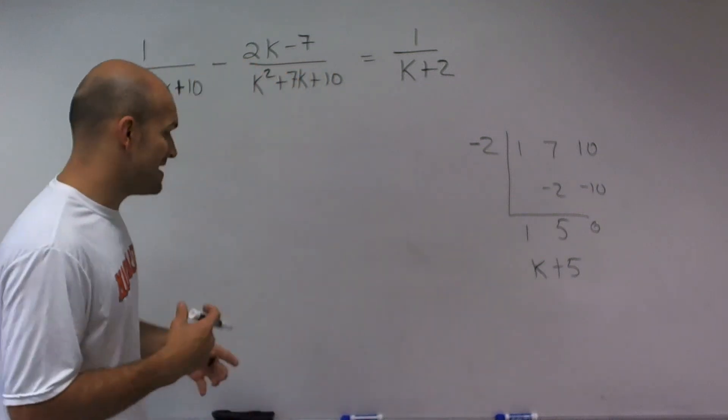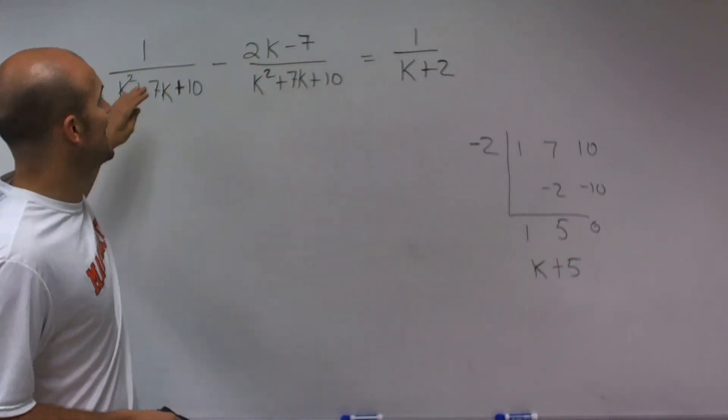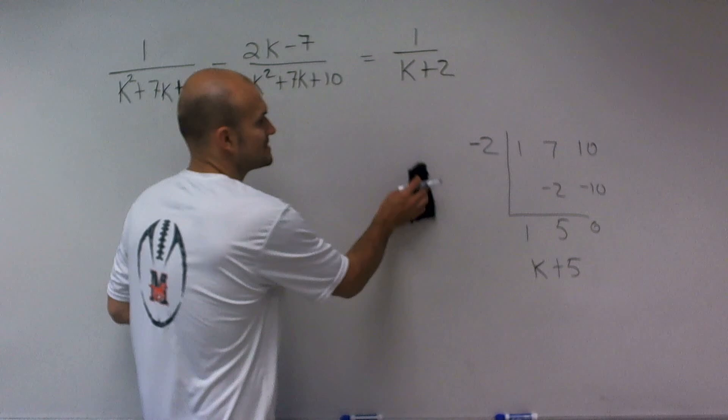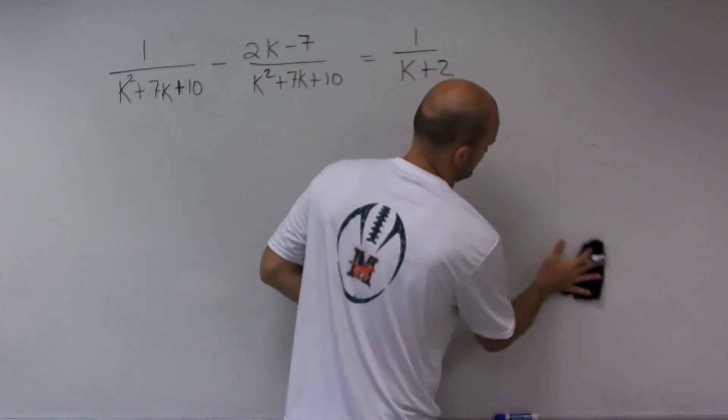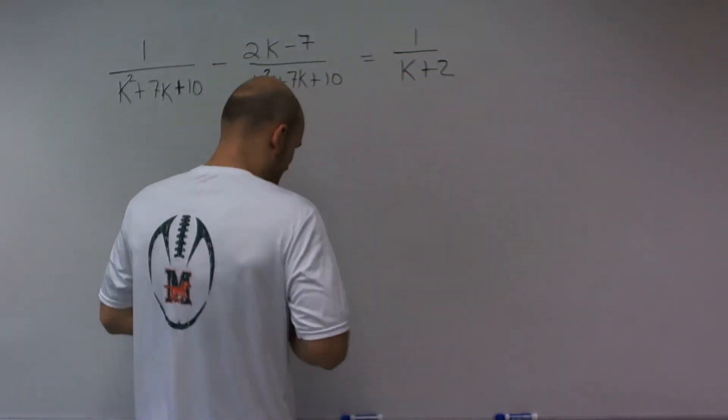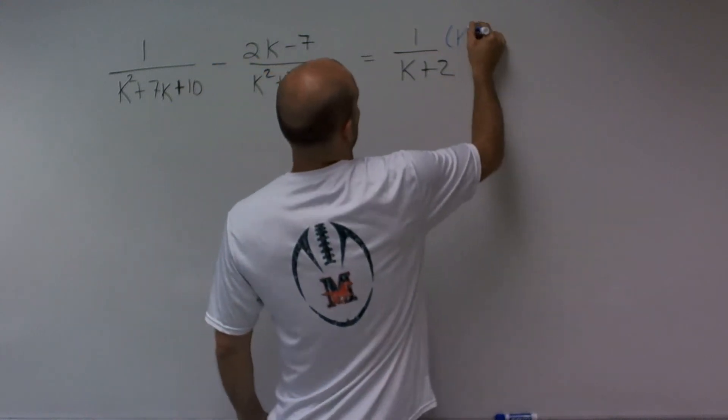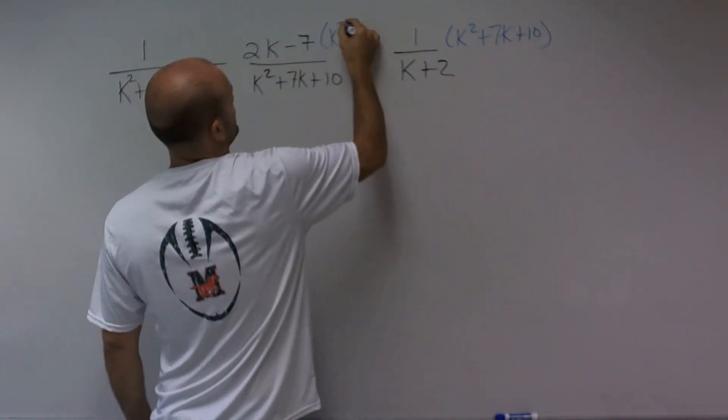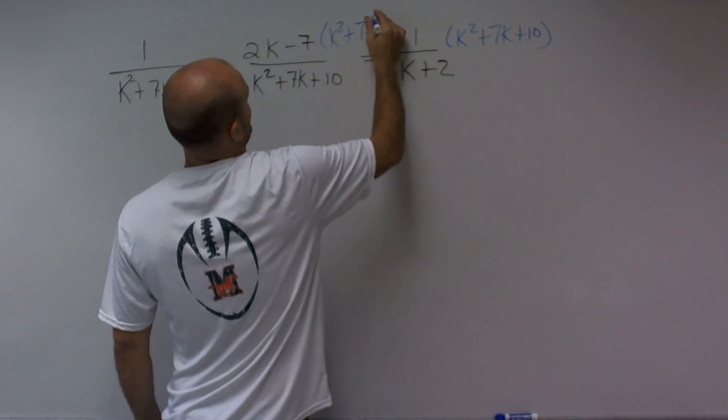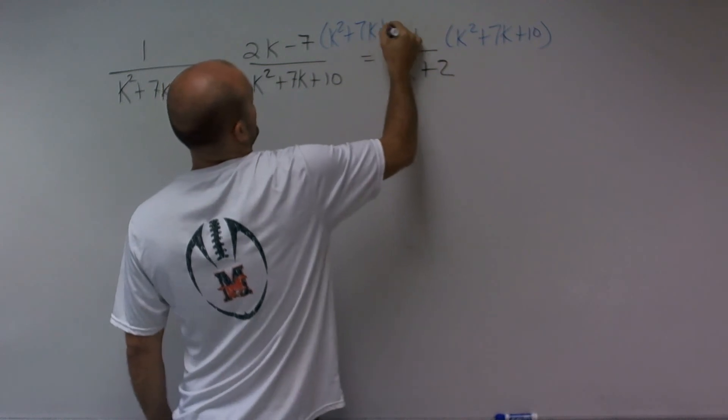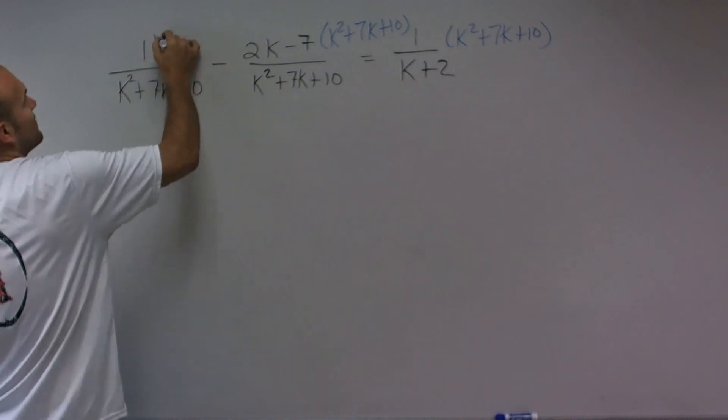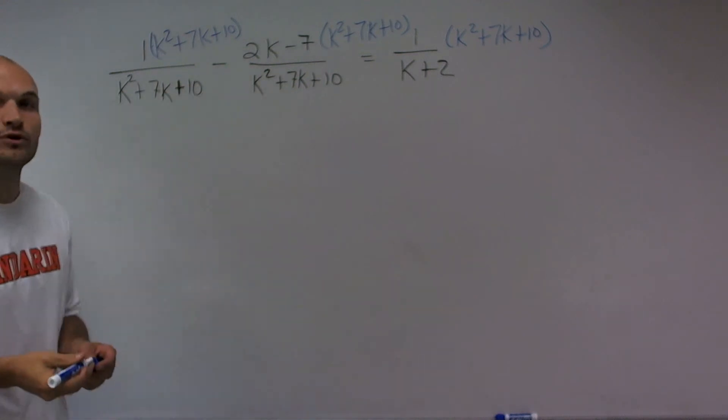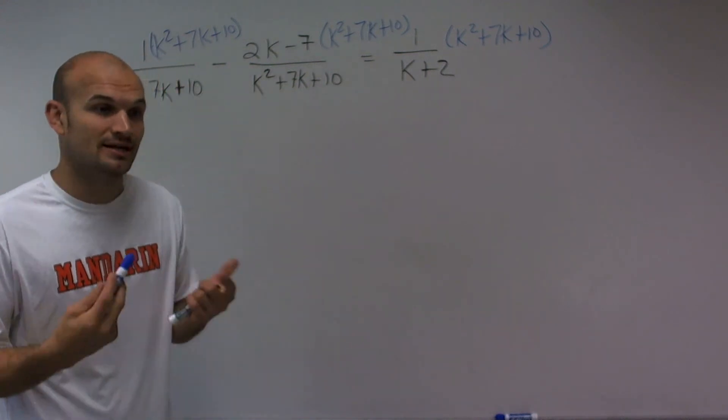So that's good. So what that means is I can actually multiply every single one of my terms by k squared plus 7k plus 10, since that is my least common denominator. So that's exactly what I'm going to do. We're going to multiply every term by k squared plus 7k plus 10. And you've got to make sure you multiply every term by k squared plus 7k plus 10 to produce equivalent equations, and keep our solution true.